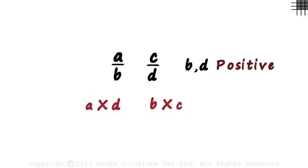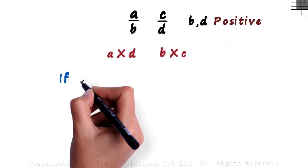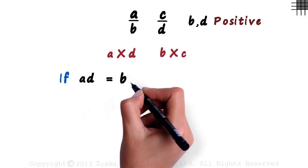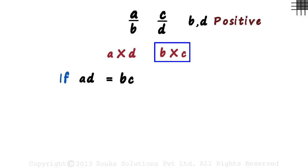There are three simple things we need to understand here. If AD, which is the product of A and D, is equal to BC, the product of B and C.